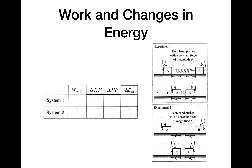Here we have a case where we're looking at work and changes in kinetic energy in two experiments. In experiment one, two hands are pushing in on blocks A and B with a constant force of magnitude F naught. There's a spring between them, and the blocks start at rest and end with a velocity equal to zero. In experiment two, there is no spring. In experiment one we're looking at the system that is the blocks plus spring, and in experiment two it's just the blocks.